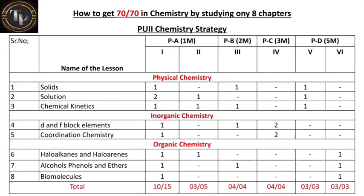For five-mark questions, there are two parts: part five belongs to physical chemistry and part six belongs to organic chemistry. In part five you have to answer three questions — all three are from the chapters I've listed. Part six also has three questions from the same organic chemistry chapters. So if you study only these eight chapters, you cover all the five-mark questions.